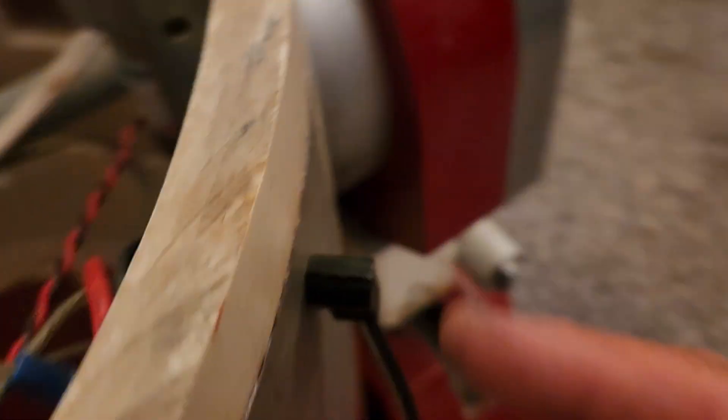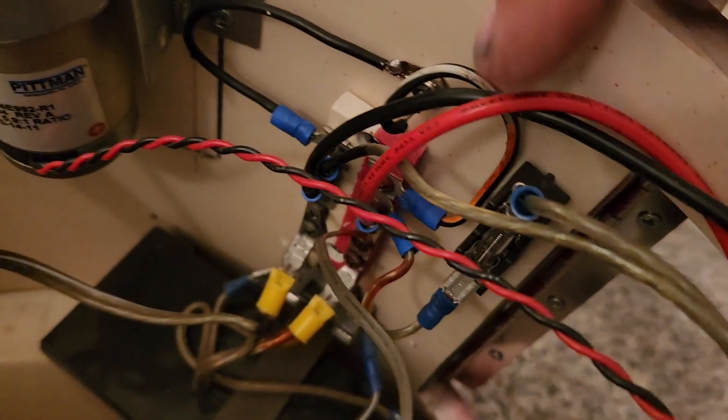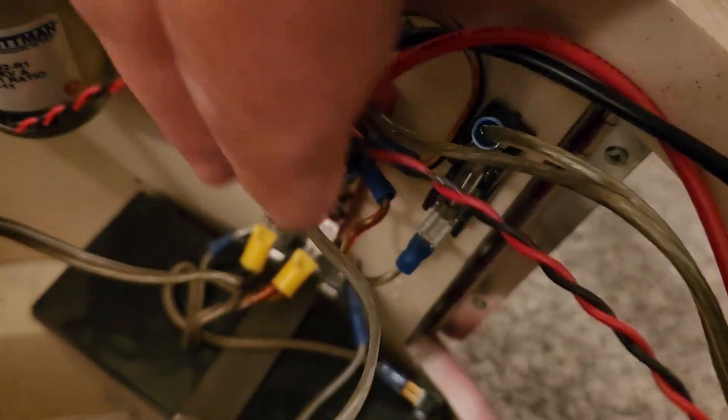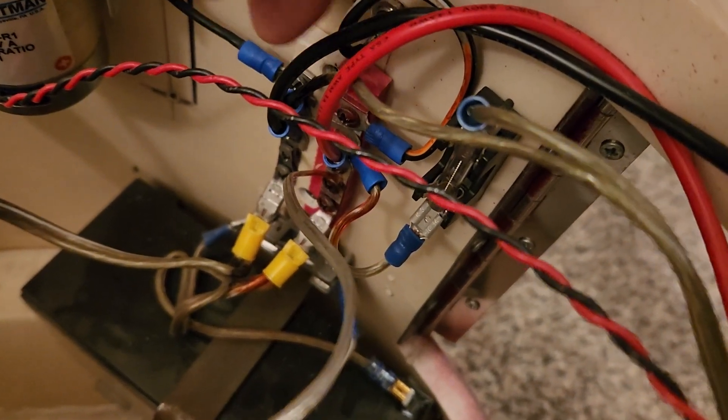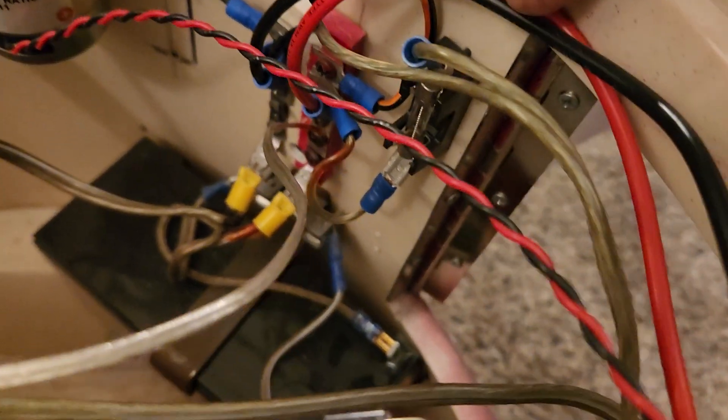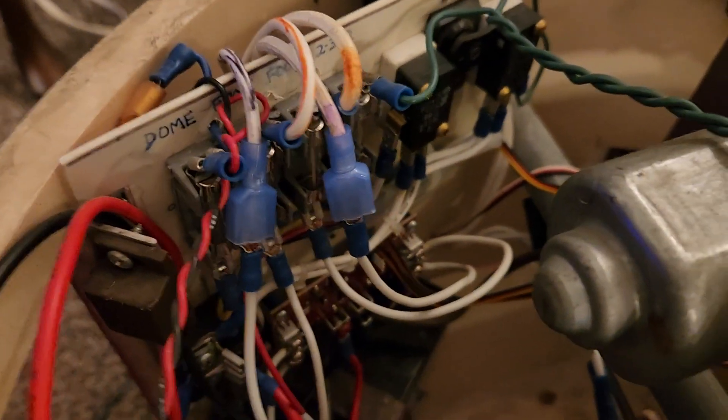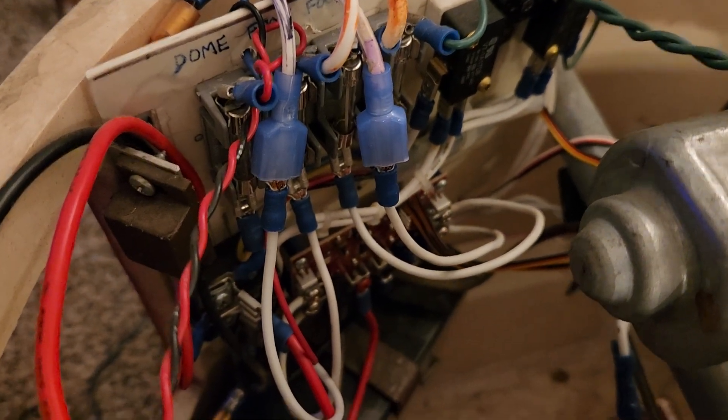That terminal block does have directly hardwired to it a recharge port so when I plug in the recharge it's recharging the batteries through the terminal block. From this terminal block we got heavy-duty wires coming over to the main power distribution area. Looks very complicated but this is quite simple. I'm gonna break it down.